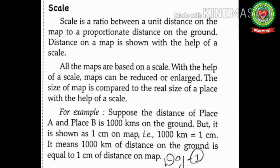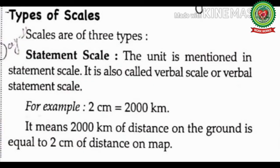With the help of a scale, maps can be reduced or enlarged — reduced means less, enlarged means big. The size of a map is compared to the real size of a place with the help of a scale. For example, suppose the distance between place A and place B is 1000 km on the ground, but it is shown as 1 cm on the map — meaning 1000 km of distance on the ground equals 1 cm of distance on the map.